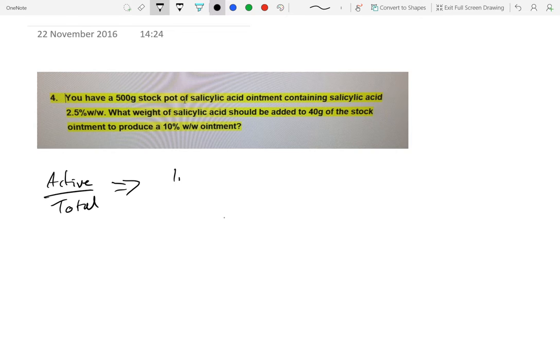What does that mean? Initially, the initial amount of active in the 40 gram stock, plus an added amount of salicylic acid which we don't know, so we often call that x. That together gives the total of active ingredient. And then we have the total, which means what we start with, which is 40 grams, and that's going to increase in weight by however much salicylic acid we add.